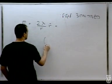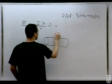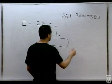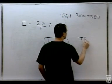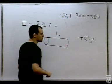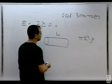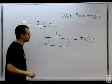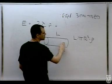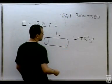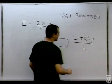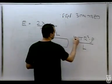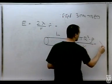נסתכל על הגליל על איזושהי יחידת אורך L שרירותית, נחשב כמה מטען יש בו ונחלק ב-L. כמה מטען יש בגליל? פאי R בריבוע כפול רו כפול L — זה הנפח כפול צפיפות. ואנחנו רוצים את צפיפות המטען האורכית, כלומר כמות המטען חלקי האורך — ה-L מצטמצם. וזה הביטוי עבור למדה של הגליל: λ = πR²ρ. (Take an arbitrary length L of the cylinder, compute the charge inside and divide by L. Charge = πR²ρL. Dividing by L gives λ = πR²ρ.)